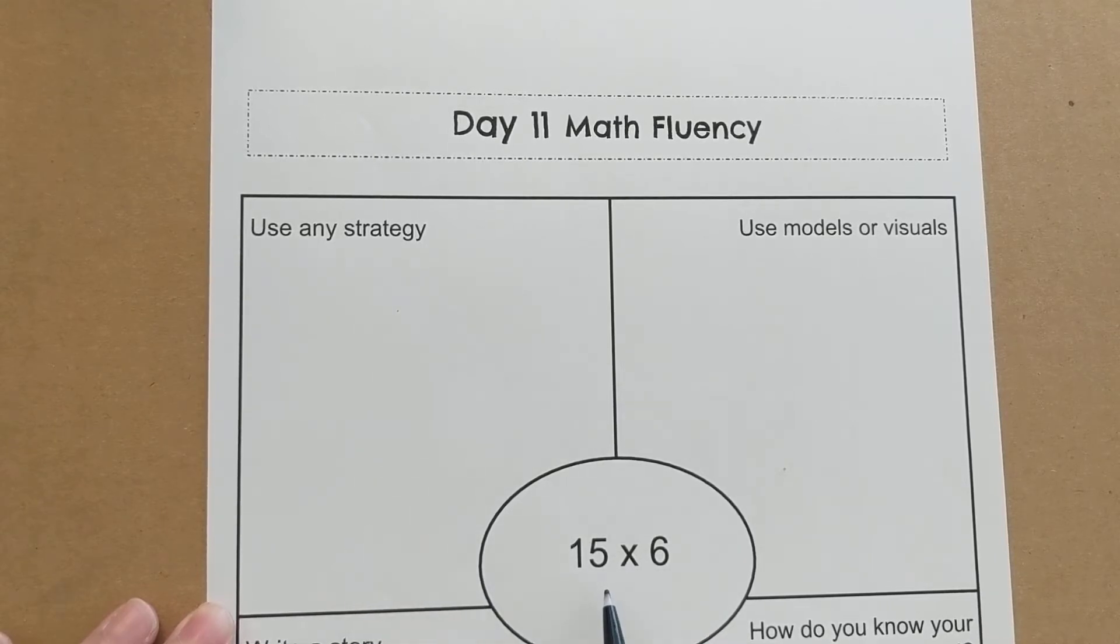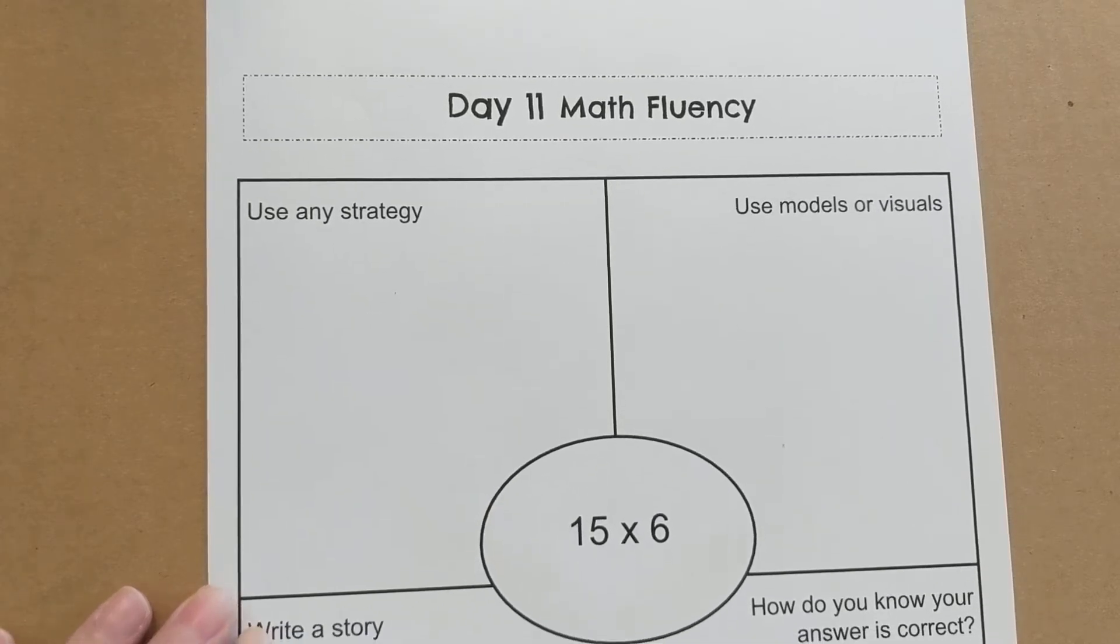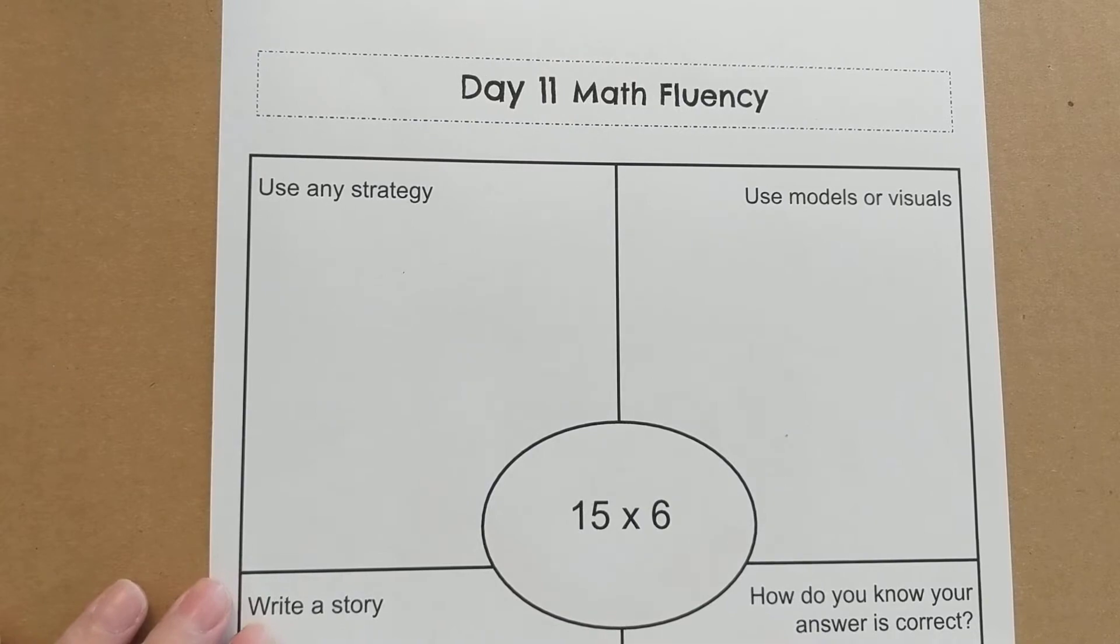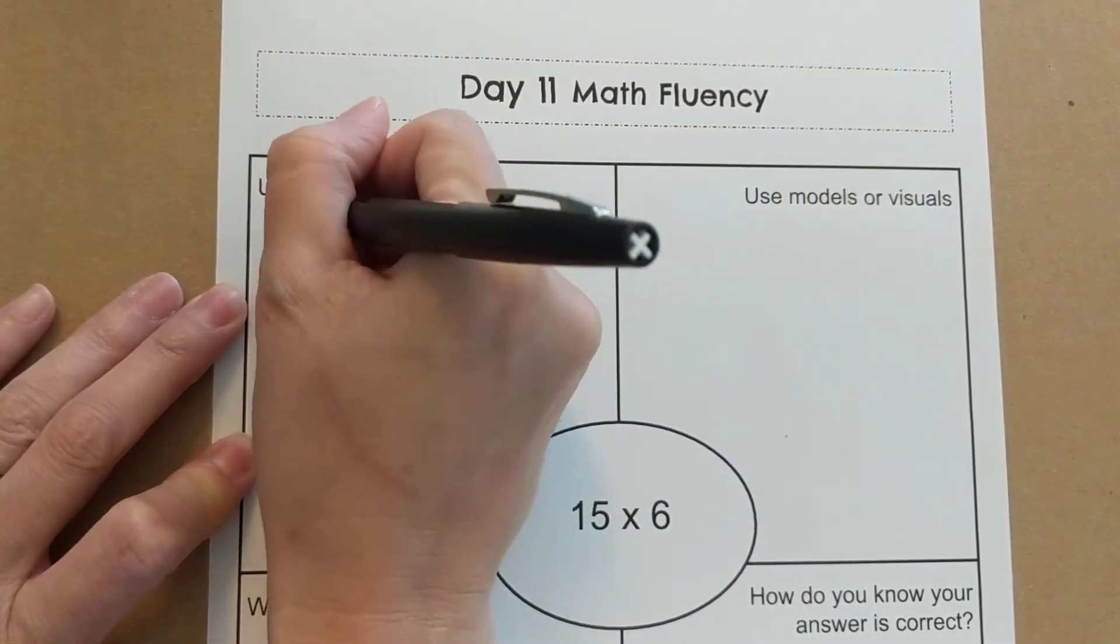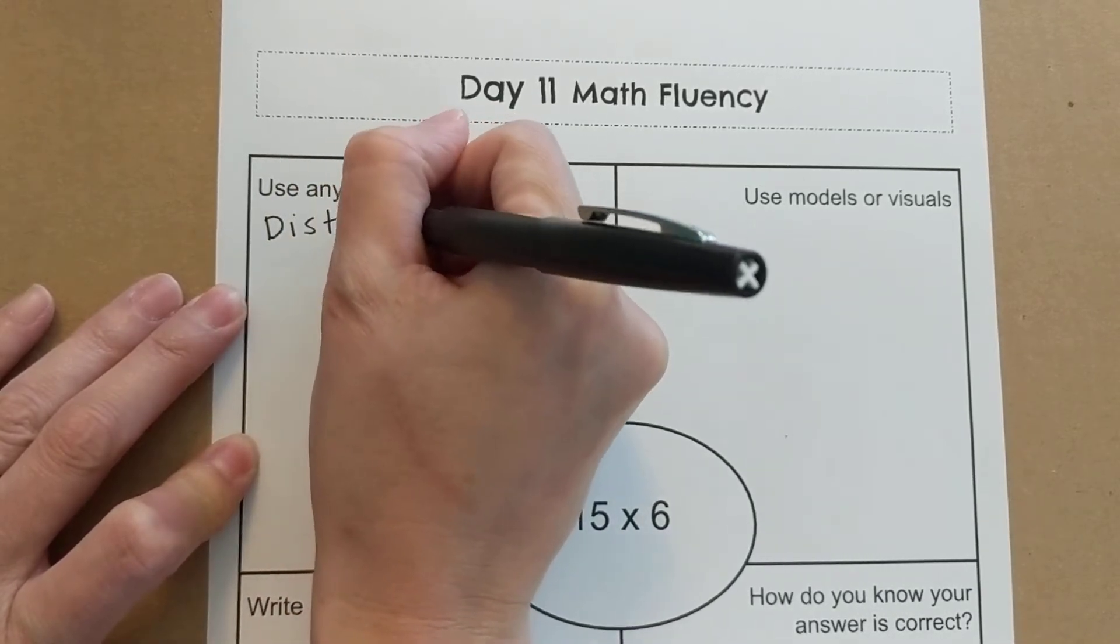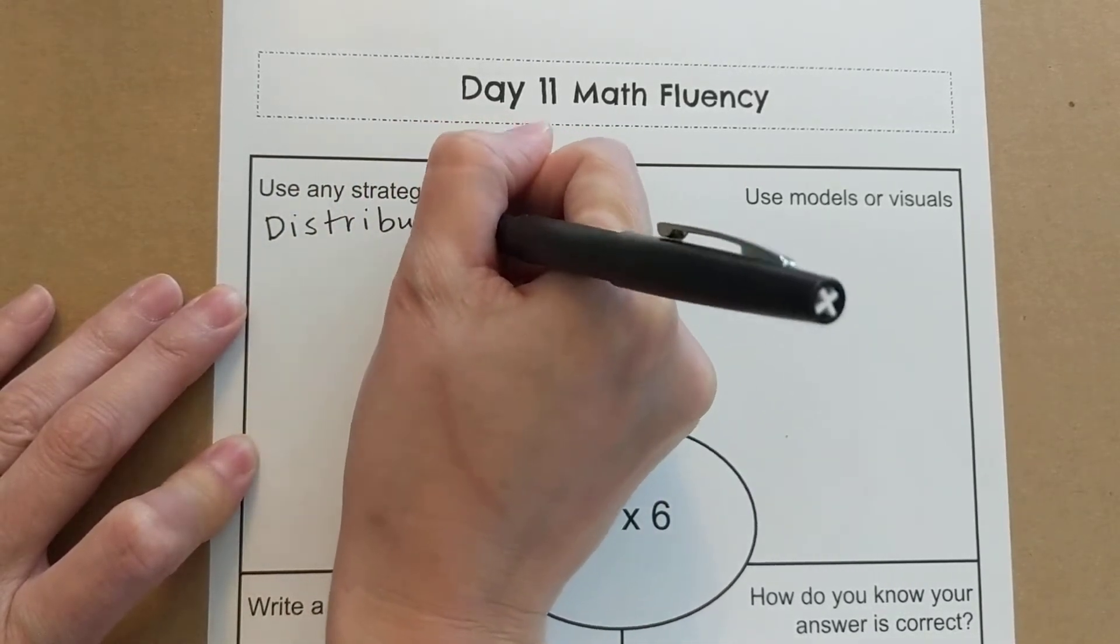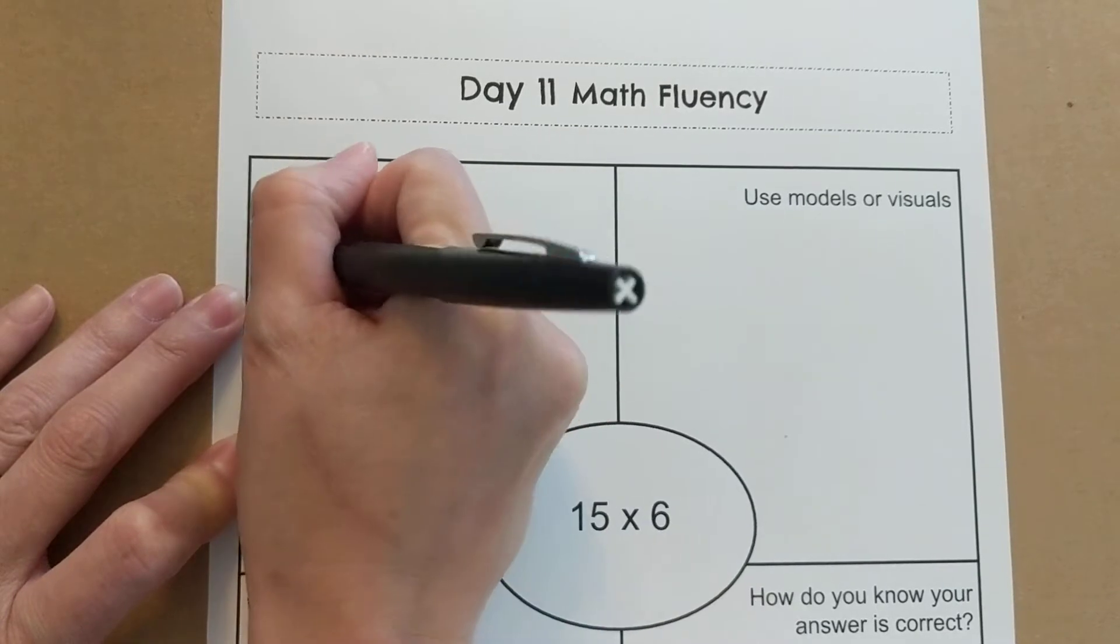So you might look at that problem and want to run away, but there are strategies we've learned in class that can help you with this. And one of them is a property called the distributive property. So we're going to use the distributive property as our strategy.